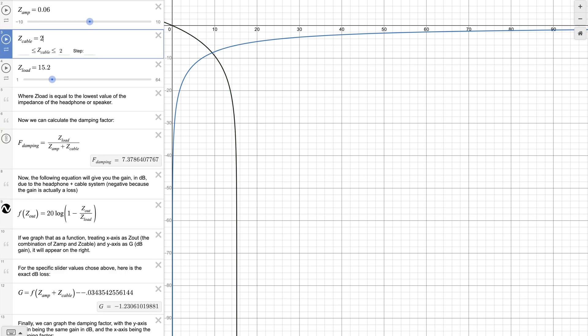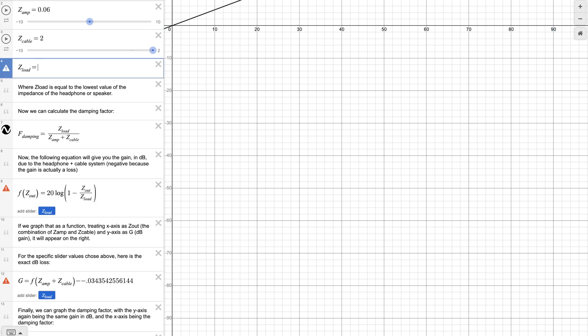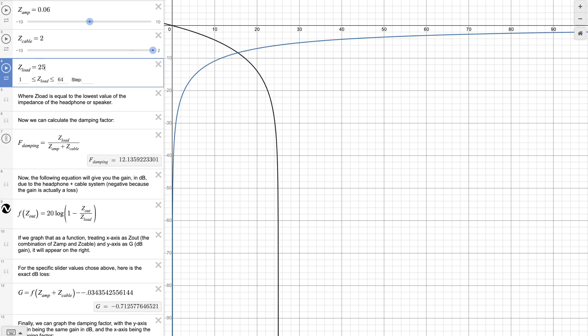This is because the damping factor is higher wherever there is an impedance peak. Going back to the Linem cable, the SPL drop at 1 kHz is 1.23 dB, but let us say the bass peaks at 25 ohms. The SPL drop for the bass is now -0.71 dB, meaning a change in the measured response.